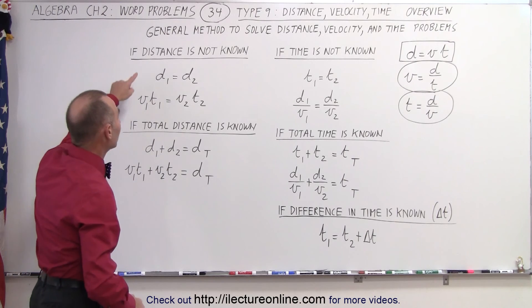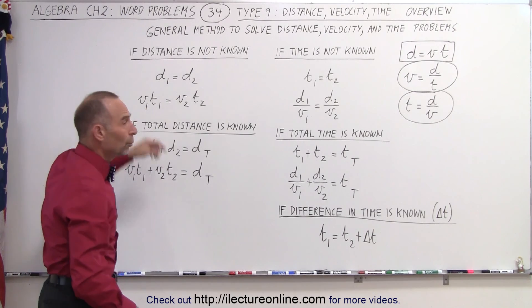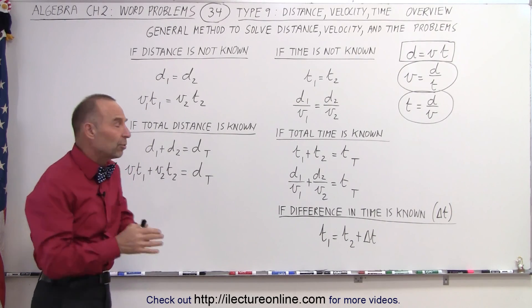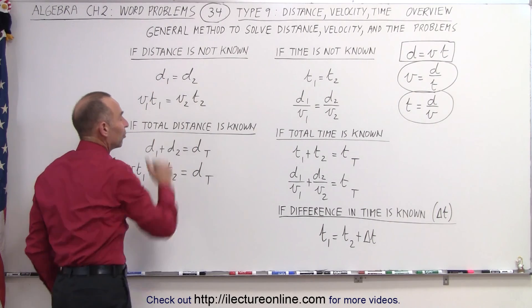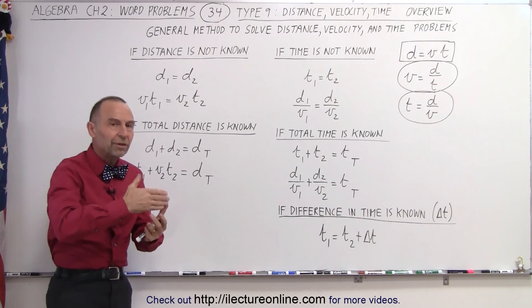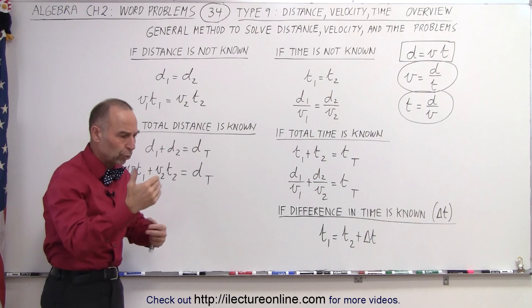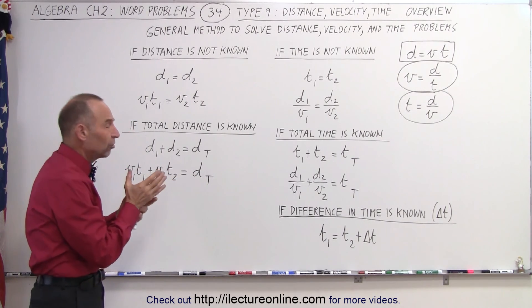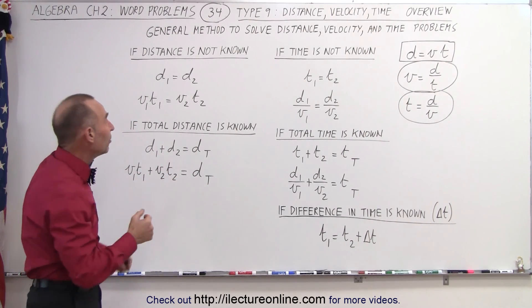If we're in a situation where the distance is not known, what we can then do is come up with an equation where we set distance 1 equals distance 2. Typically, there are two different rates, or two different people, or two different modes of movement that causes a different velocity in each case.